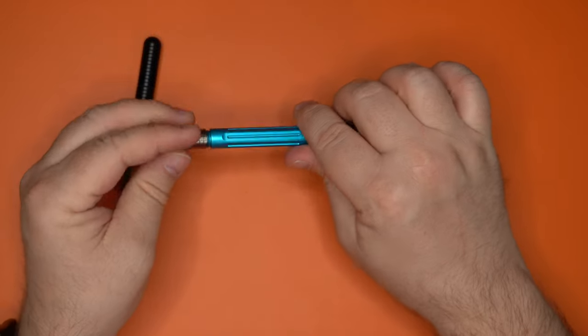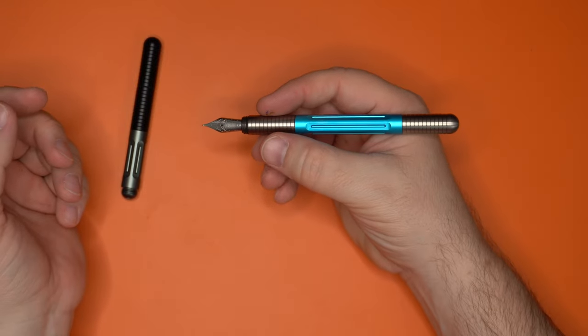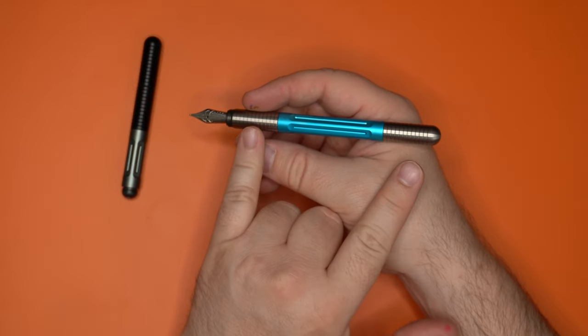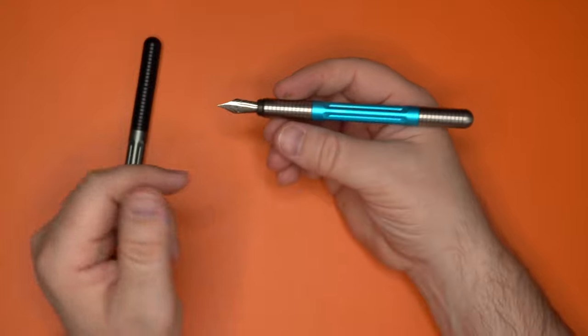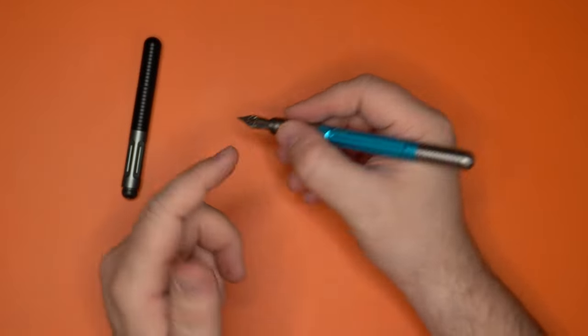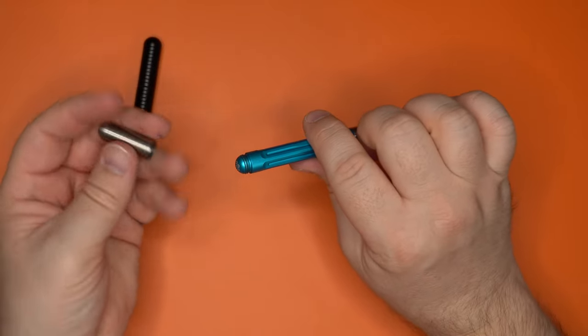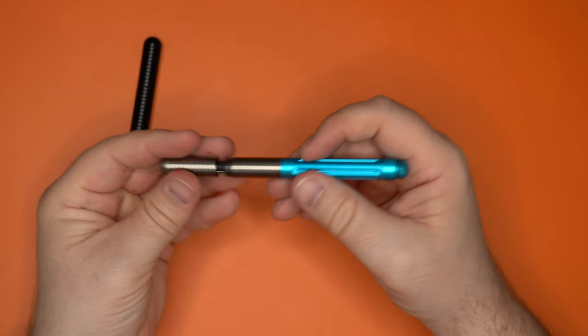And like I said, you can screw this on the back to post the pen. And it looks real slick when you post it. You get a very nice symmetry between the section and the cap with this nice blue bit in the middle. It looks good, feels nice in the hand. This does not overweight it or anything. There's not a whole lot of material in the cap, although it is titanium. It does have a little bit of weight. You're not going to notice it on the back of this pen.